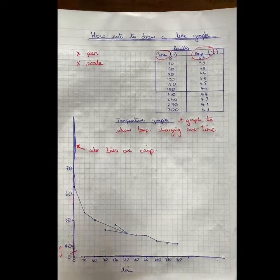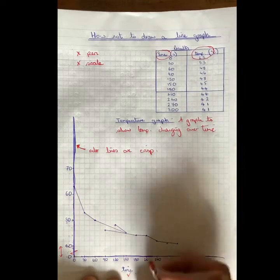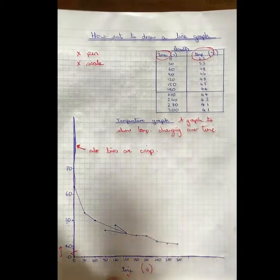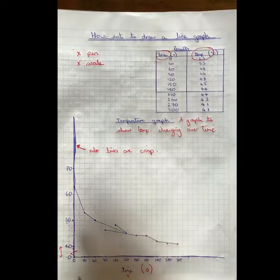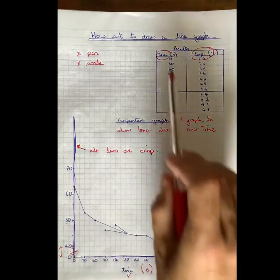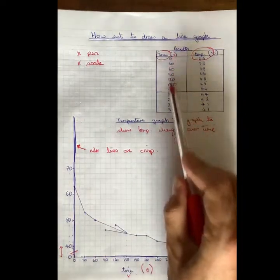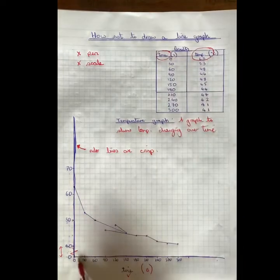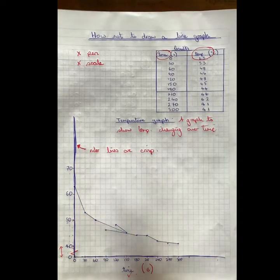Next one is, are the axes labeled? Look here. We've got time. That's fine. But what are the units of time? Always, by the way, make sure that your independent variable is along the bottom. Whatever's in the left of your results table should be along the bottom. There are some circumstances where you might want to change that.